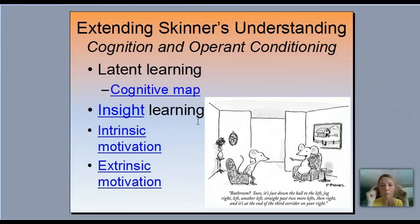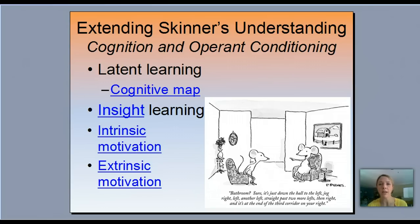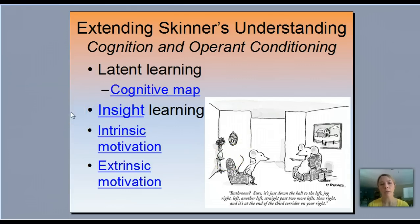Cognition refers to your brain and thinking. Insight learning is that 'aha' moment — where you've been thinking about a problem, working your way through a math problem, and you get that great feeling of suddenly understanding. Things just fall into place. This type of learning has been shown to be very powerful. The value of exploration and not stealing anyone else's aha moment is important — because when you figure something out yourself, it's super powerful for long-term learning.